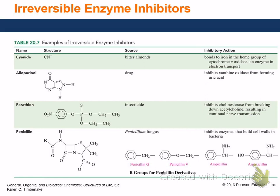Cyanide — source: bitter almonds. When working with cyanide, you know something went wrong when you can taste almonds, because it makes HCN gas — the same stuff used in the gas chamber — and it dissolves in your mouth from the air. Cyanide bonds to the heme group on cytochrome c, an enzyme in the electron transport chain. It essentially puts a short circuit in your electron transport chain so you constantly use energy but don't get any ATP from it.